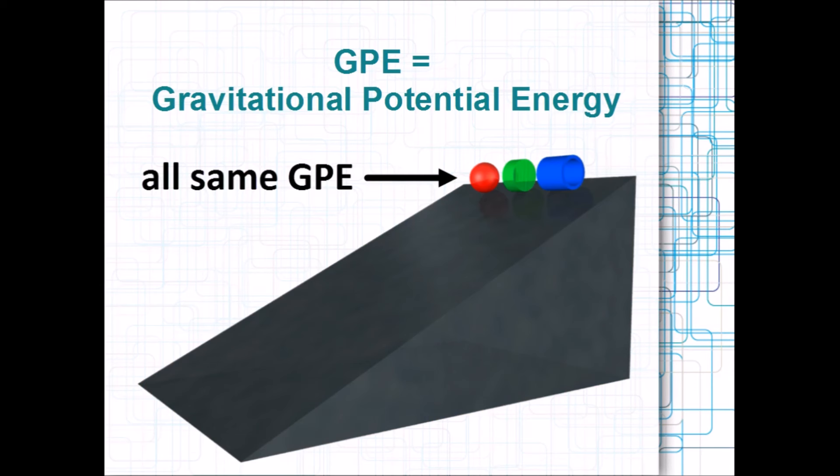Because all our objects start at the same height, and have the same mass, they also have the same gravitational potential energy. So their only difference is rotational inertia. Oh, and colour, but that has no effect in a race.